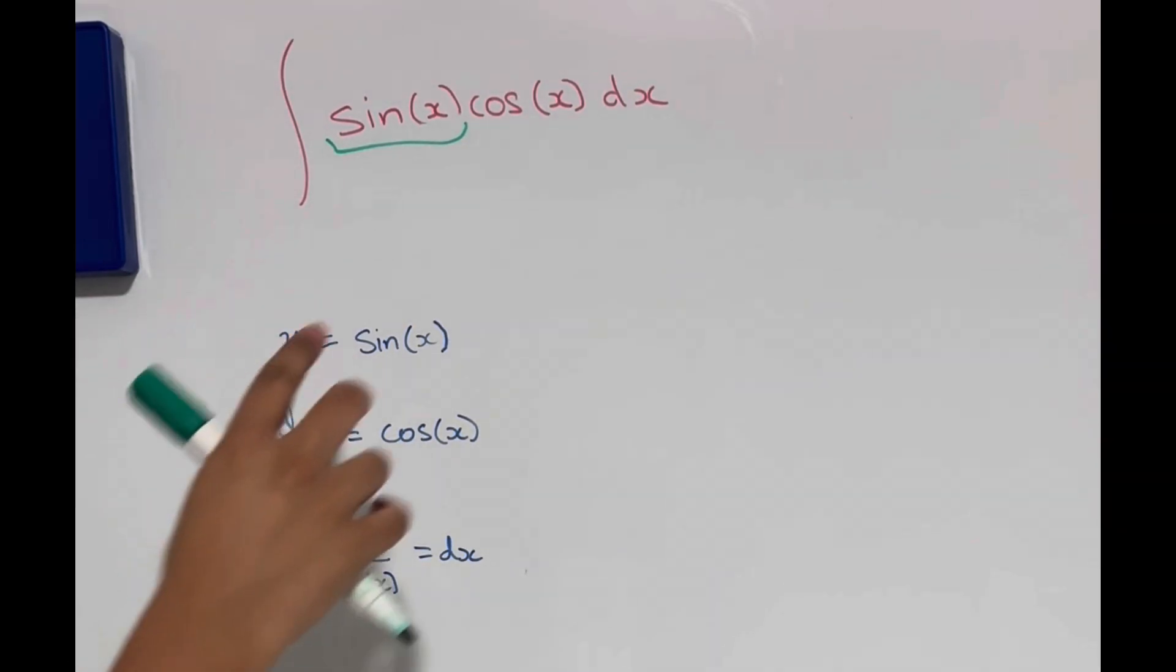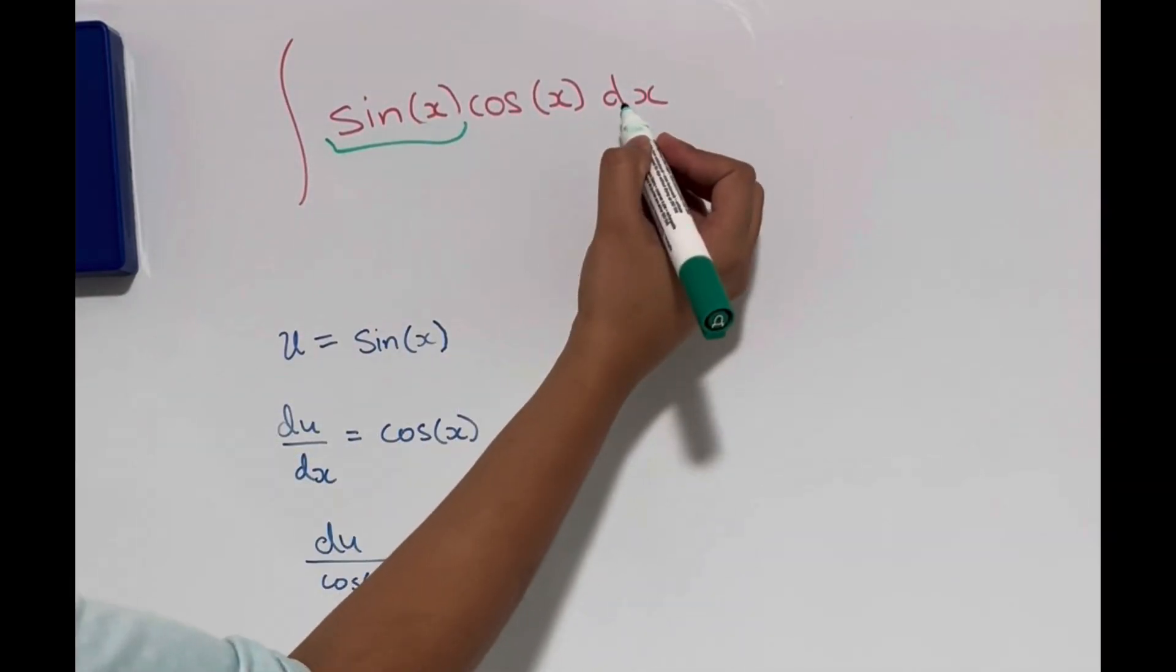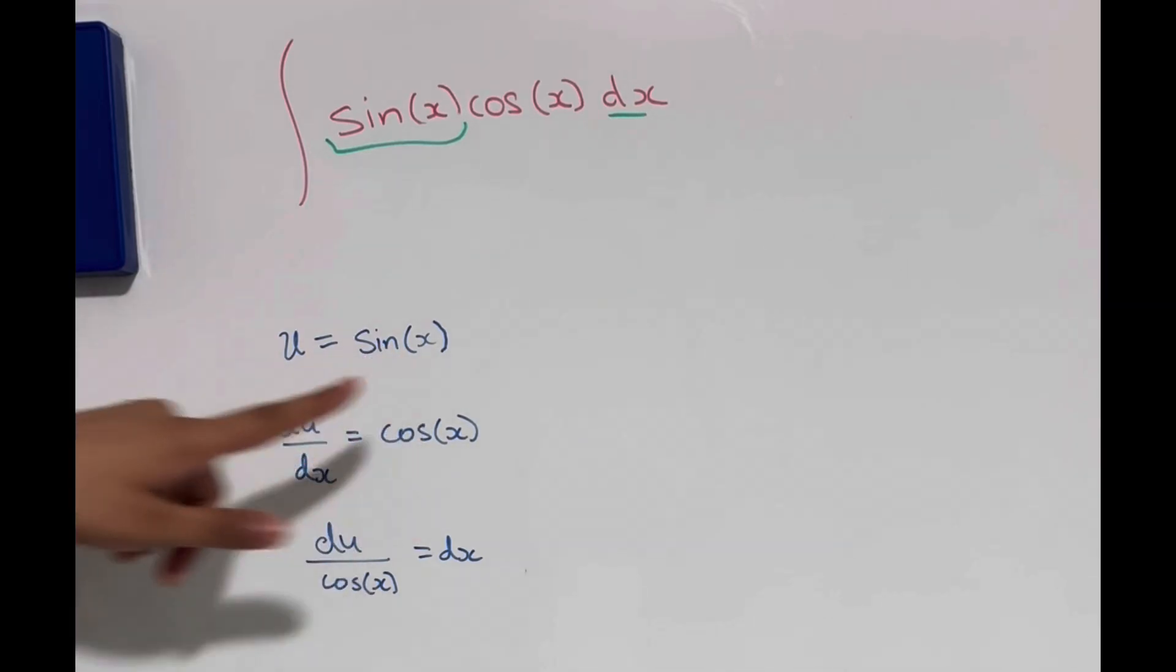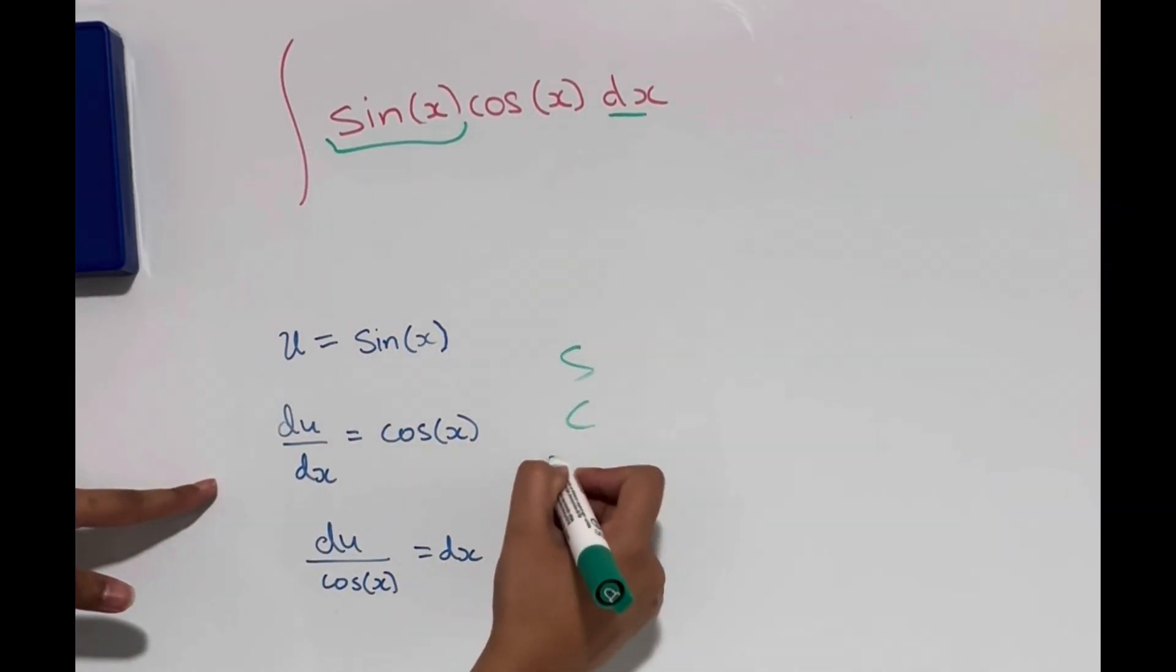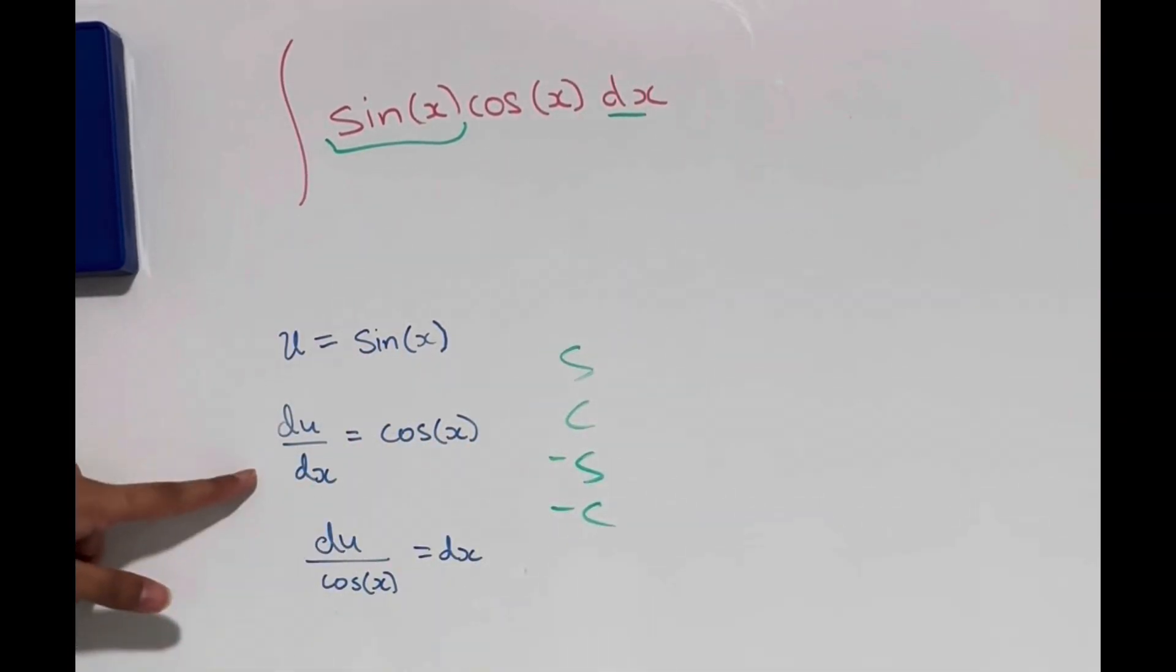Now what we want to do is rewrite this function in terms of u and also rewrite the dx in terms of u. So if u is sin x, we know that its derivative is going to be cos x. So du/dx is cos x.